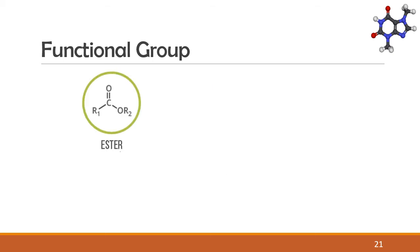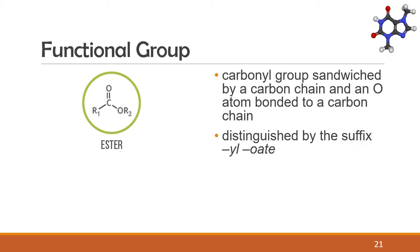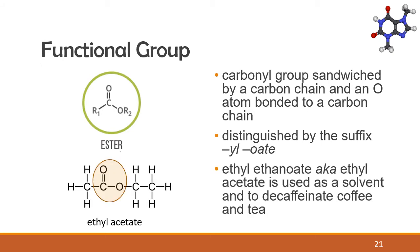Next, we have ester. An ester has a carbonyl group sandwiched by a carbon chain and an oxygen atom bonded to another carbon chain. Esters are distinguished by the suffix "-yl -oate" in their name. Ethyl ethanoate, also known as ethyl acetate, is used as a solvent and to decaffeinate coffee and tea.